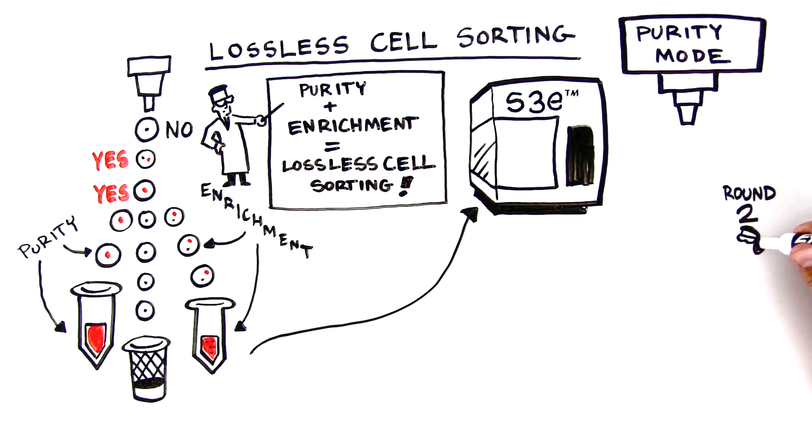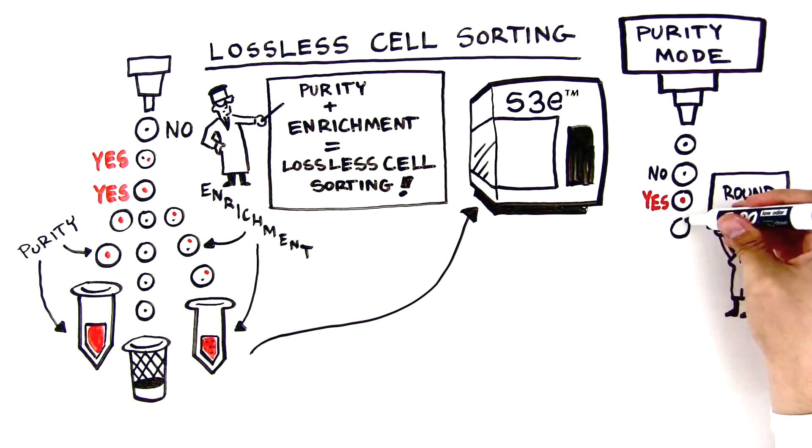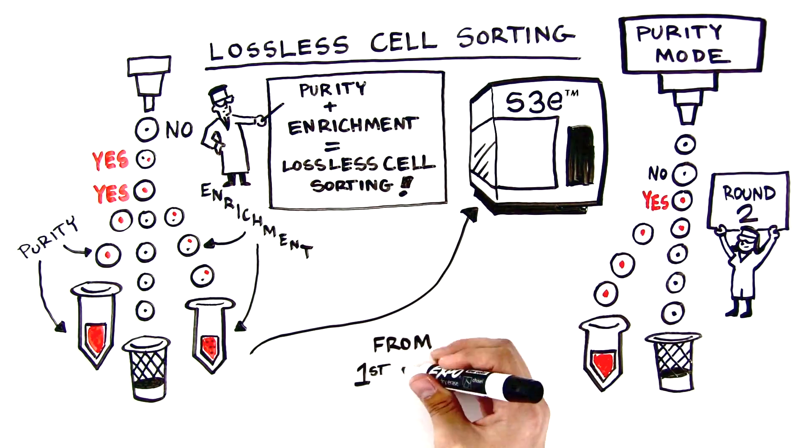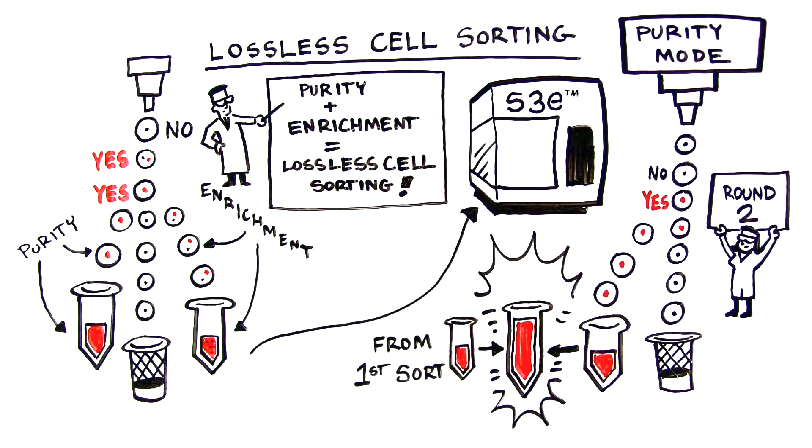The so-called impure events are simply sorted into a separate tube, which can then be re-sorted into purity mode to collect target cells missed the first time.